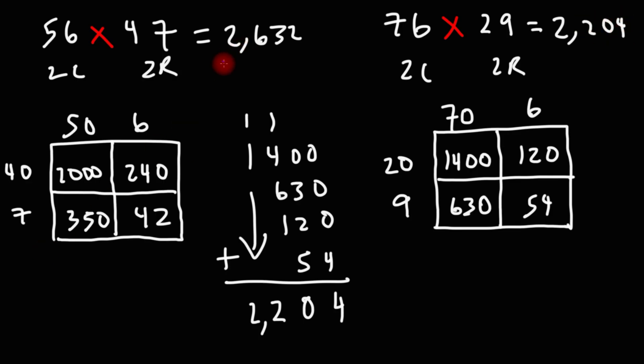So that's how you could multiply two numbers using the box method of multiplication.